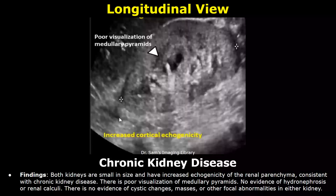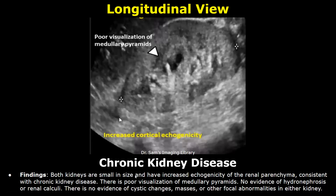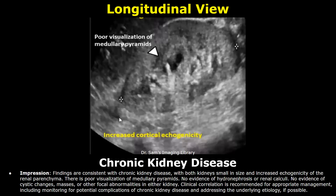This example is of chronic kidney disease. In the findings, both kidneys are small in size and have increased echogenicity of the renal parenchyma. Also, there is poor visualization of medullary pyramids. This is the impression. Findings are consistent with chronic kidney disease, with both kidneys small in size and increased echogenicity of the renal parenchyma. Also, there is poor visualization of medullary pyramids.